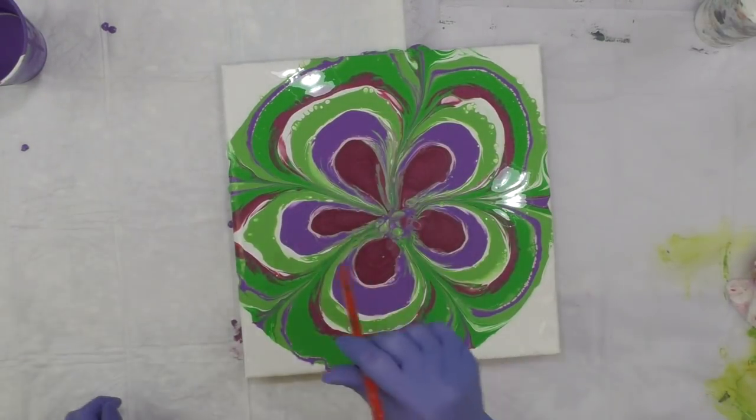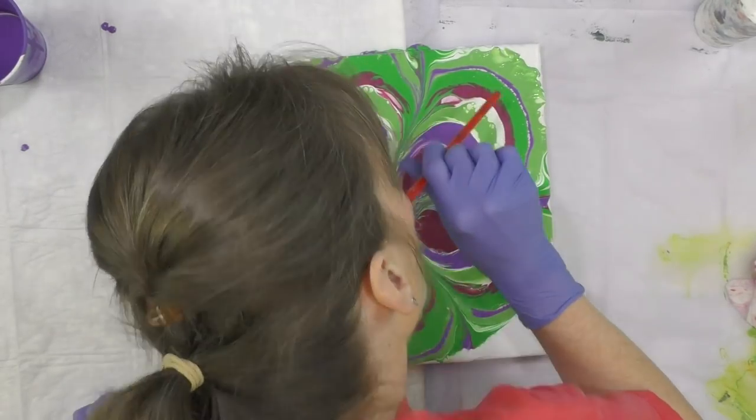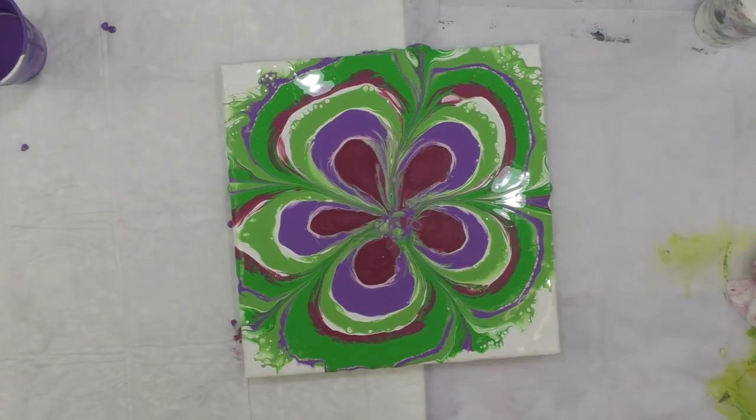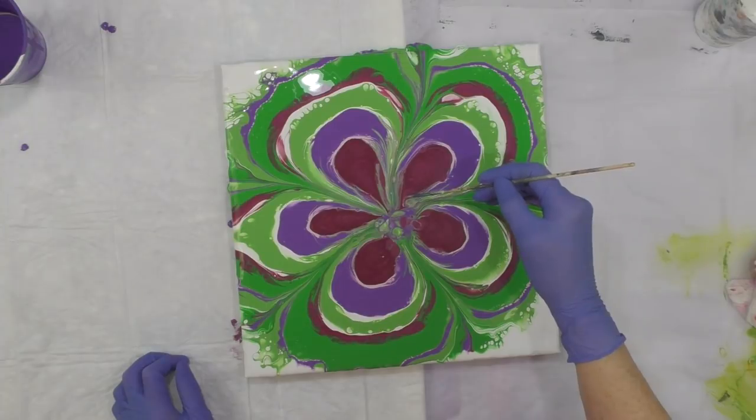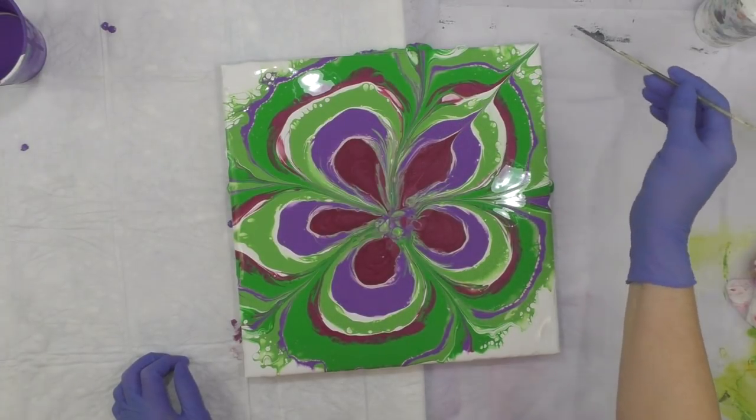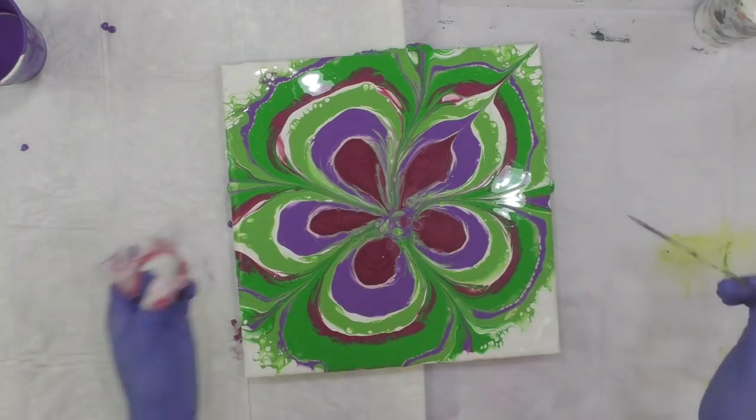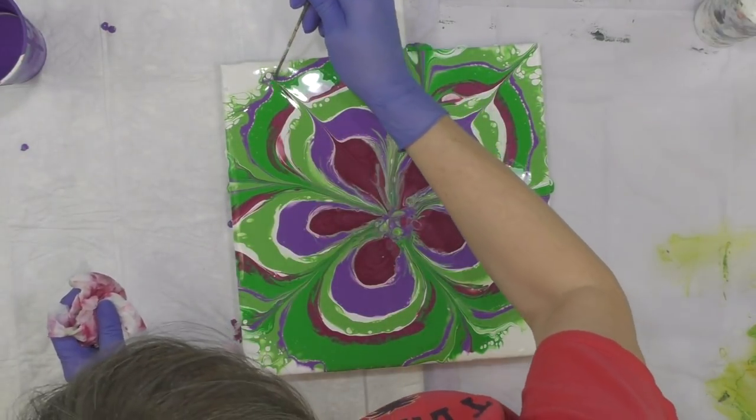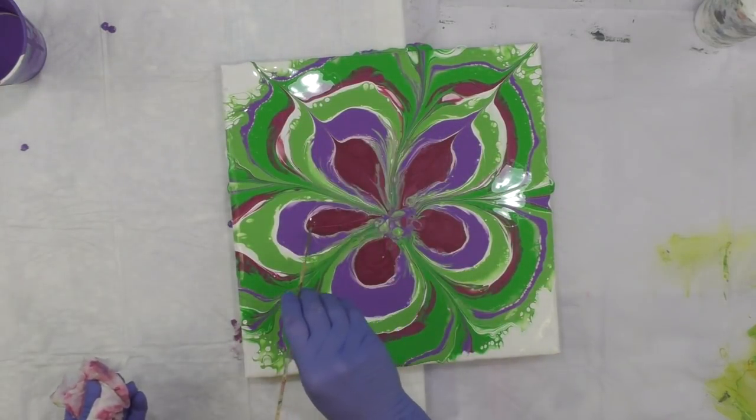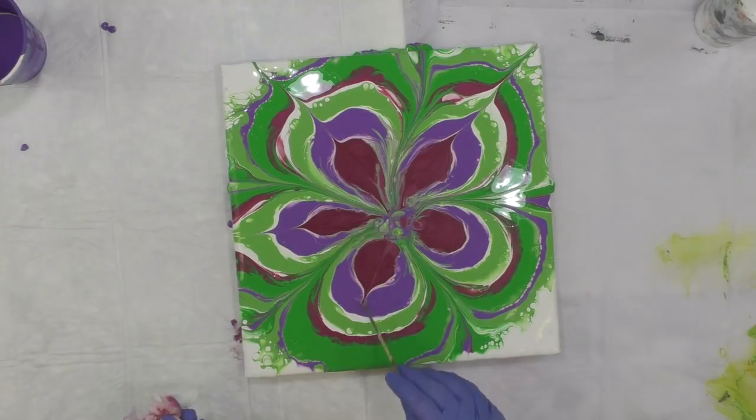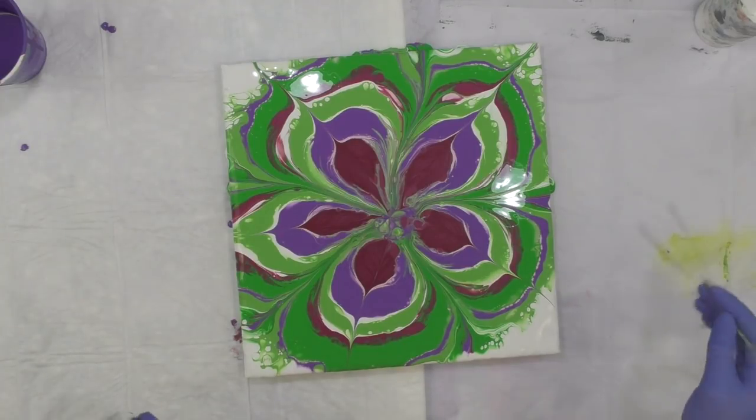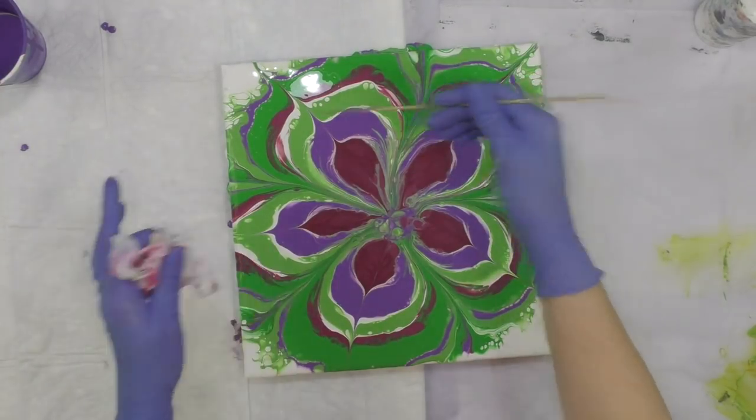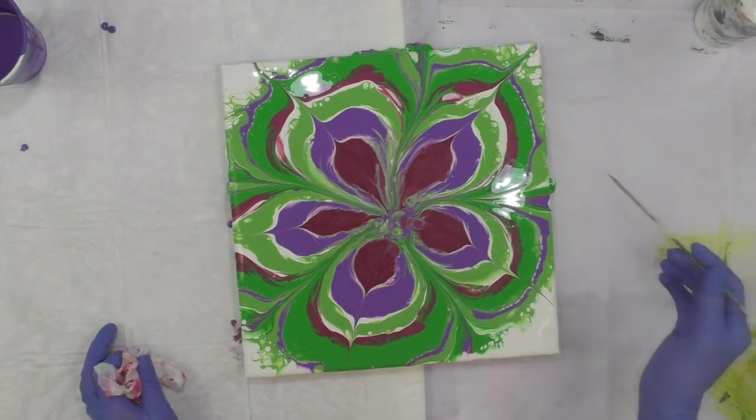I think what I'm going to do is blow out the edges just a little bit. Then you can take your skewer if you want to and you can bring it inwards or you can take it out to make points. Wipe off your skewer every time you drag your stick through.